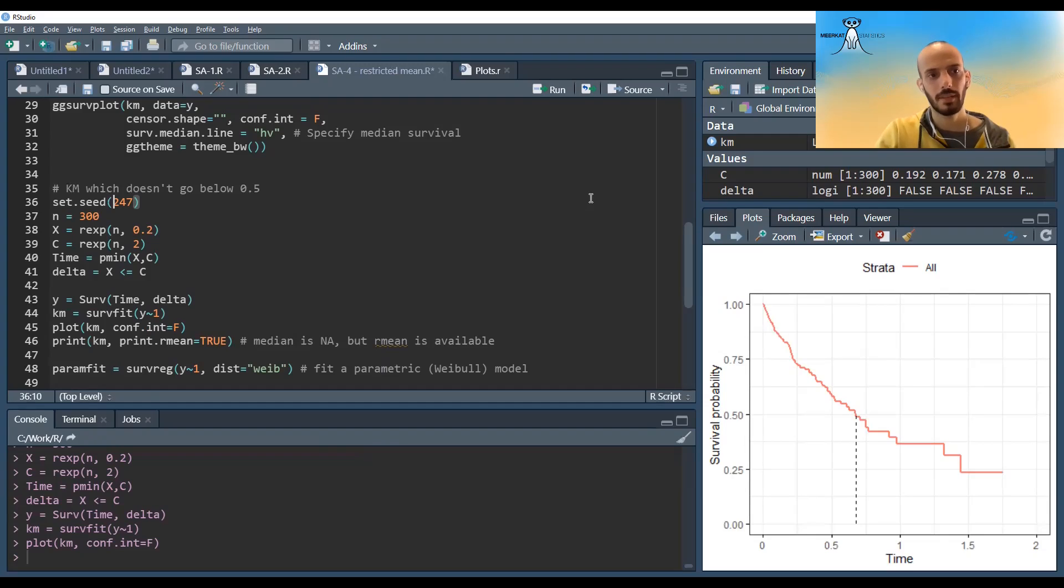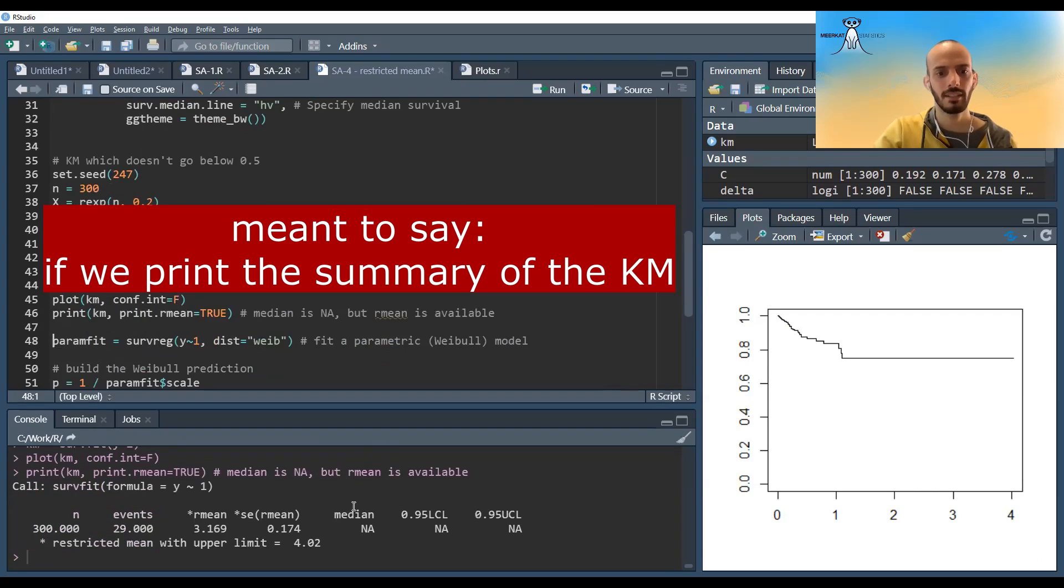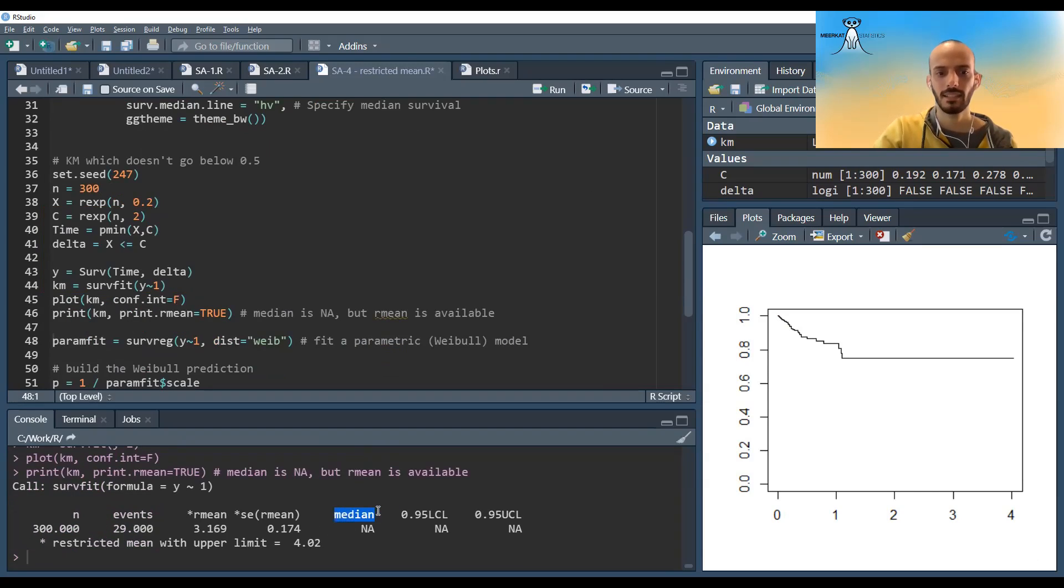Okay, so let's see an example where the Kaplan-Meier doesn't go below 0.5. And now look, if we print the restricted mean, we see that the median it gives us not available, but it can still give you a restricted mean. So it can still produce a restricted mean, which is just the area under the curve up to the last data point.